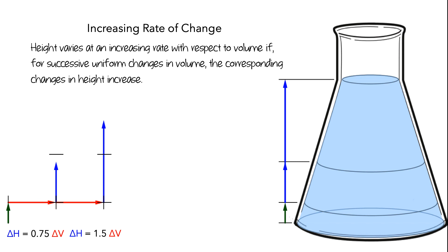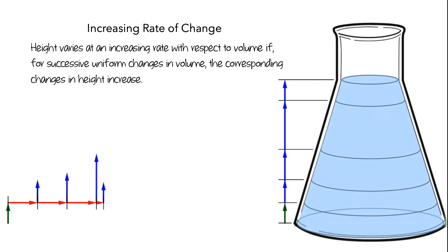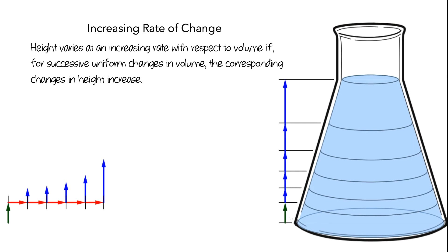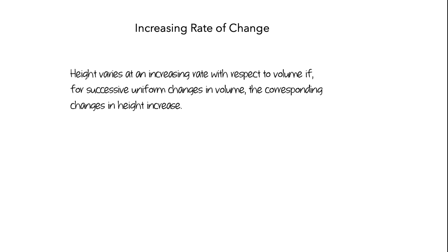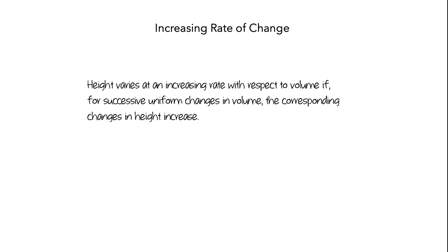Let's see what would happen if we split the added volume into 5 sections. Now we've split the amount of change in volume into 5 uniform segments. You can see that for the first amount of change in volume, the corresponding amount of change in height is small. And for successive uniform changes in volume, the corresponding changes in height increase. So this is what it means to have an increasing rate of change: for successive uniform changes in volume, the corresponding changes in height increase.